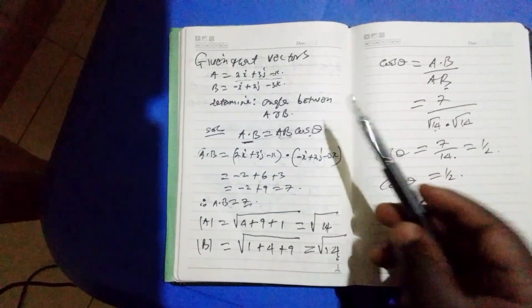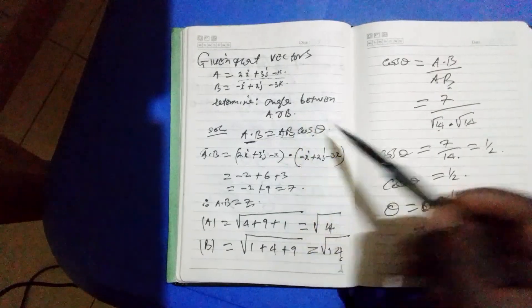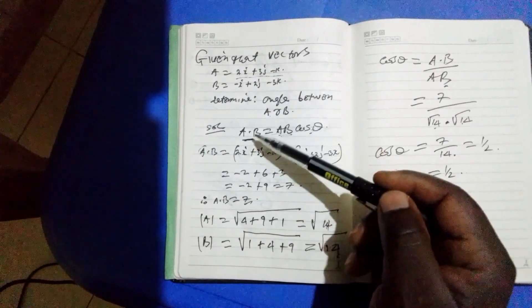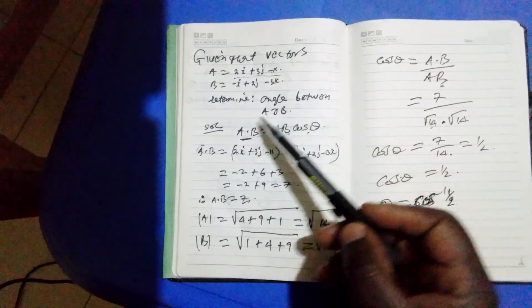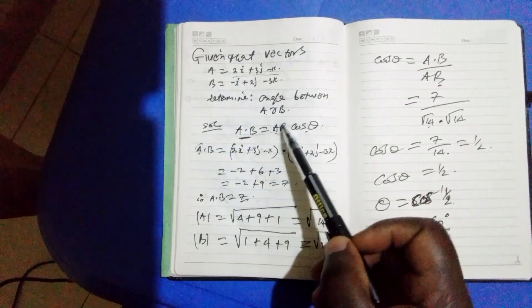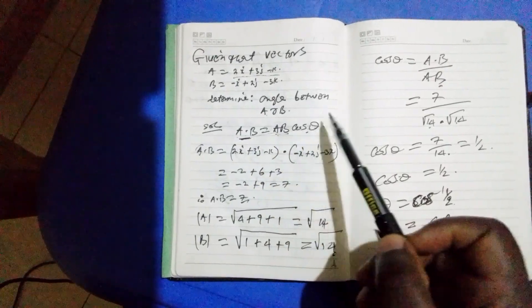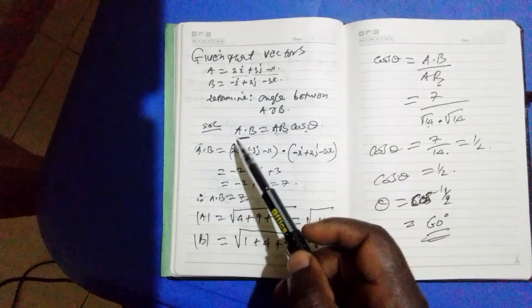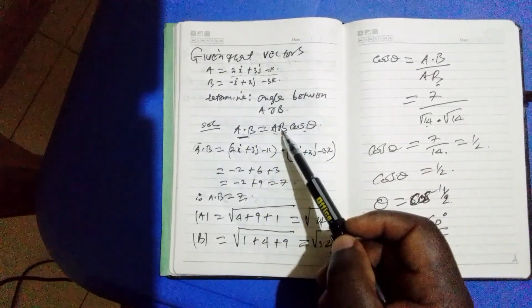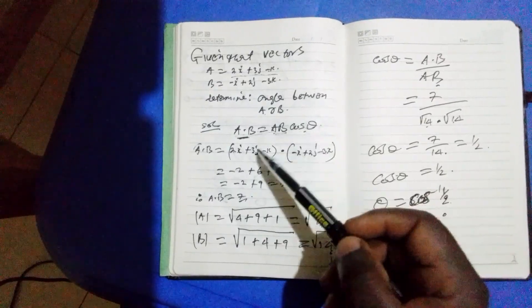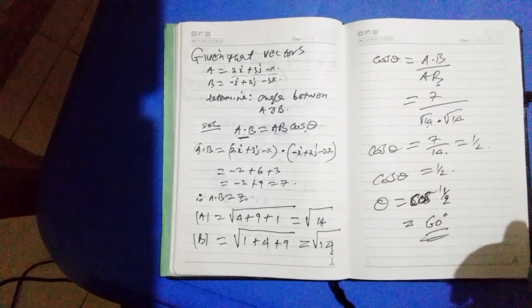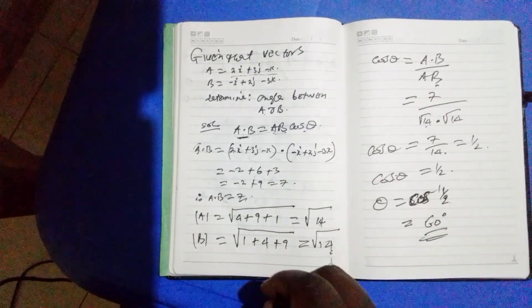So the angle between vector a and b is 60 degrees. When you've been given such an equation, the most important thing is to remember this expression: a dot b equals a, b, cos theta. You need to find a dot b, then find the magnitude of a and b, make cos theta the subject, and you'll be able to arrive at the result. Thank you for watching and listening.